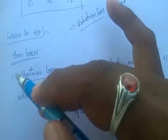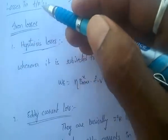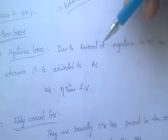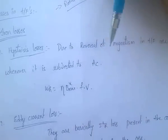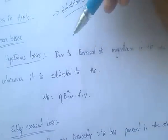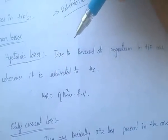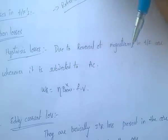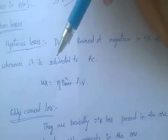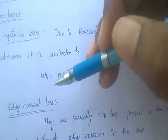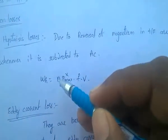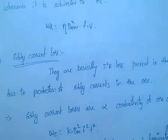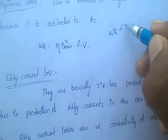Iron losses are mainly of two types: hysteresis losses and eddy current losses. Hysteresis losses are due to the reversal of magnetism — that is, magnetization and demagnetization. When the transformer core is subjected to AC, hysteresis losses are produced. The formula is: Wh = ζ × Bmax^x × F × V. Hysteresis loss is proportional to frequency.